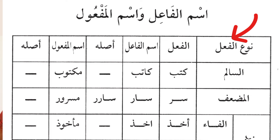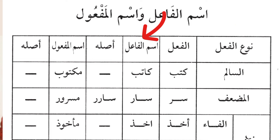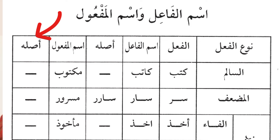Now let's look at the table. We have al-fi'l — the verb itself — and ismul fa'il — the active participle — then we have asluhu, the origin of the word. Then ismul maf'ol — the passive participle — and asluhu, the origin of the word. Let us now begin with the first type of verb.